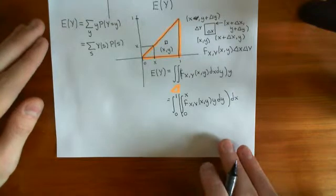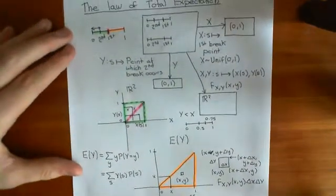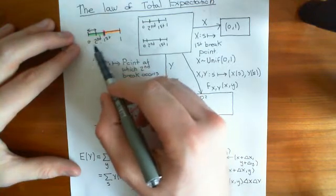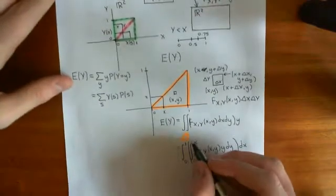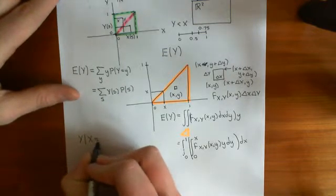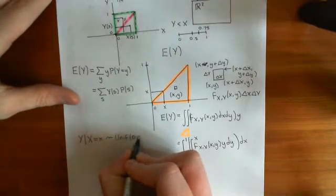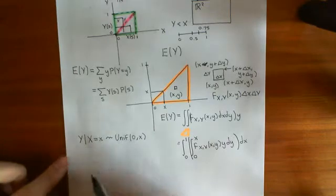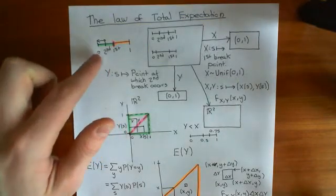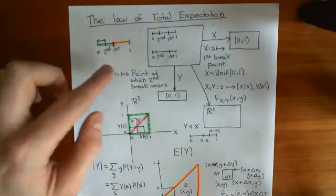Now there is a clever trick we can pull. We haven't yet used something we do know: if we know the value of X — if we condition upon the value of the first break — then we know how Y is distributed. Specifically, the random variable Y conditional on X equaling some value little x is distributed uniformly on the interval from 0 to x. Once you've made the first break and go to make the second break, the probability of the second break being anywhere within the stick from 0 to the first break is uniformly likely.